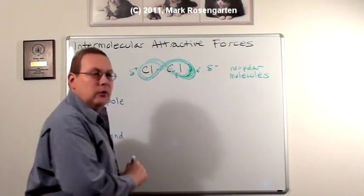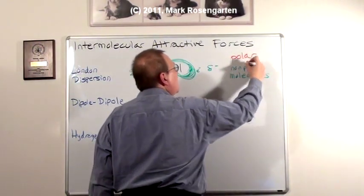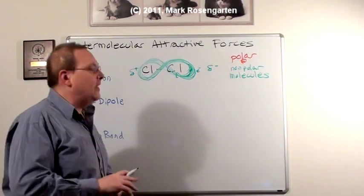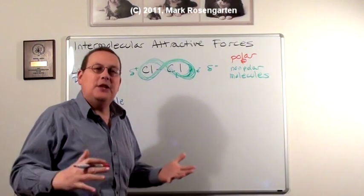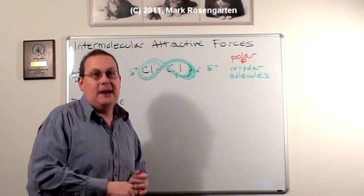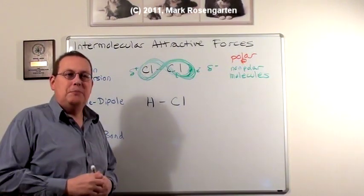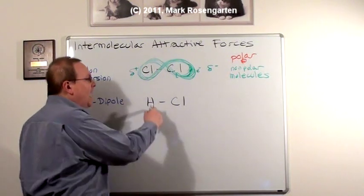Polar molecules also have London dispersion forces, but that's not all they have. Not only can they have these temporary dipoles, polar molecules, by their very definition, have permanent dipoles. In this molecule, there's going to be an uneven distribution, an asymmetrical distribution of electrons in the molecule. Why?